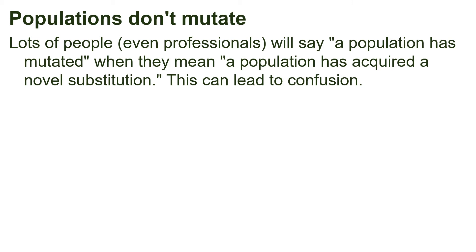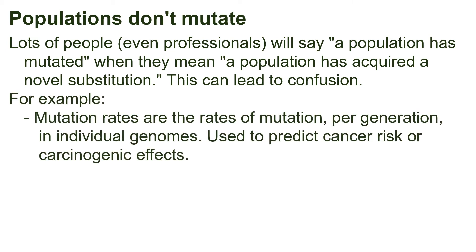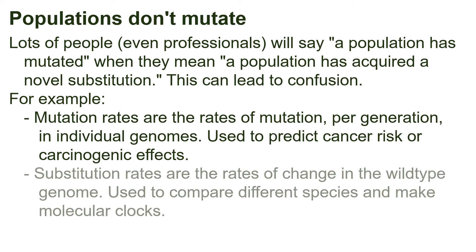This can lead to confusion. Mutation rates are the rates of mutation per generation in individual genomes, and can be used to predict cancer risk or carcinogenic effects. Hazardous chemicals known as mutagens increase the mutation rate, which is bad because somatic mutations can cause cancer. Meanwhile, substitution rates are the rates of change in the wild-type genome — the rate of evolution of the genes. These are used to compare different species and make molecular clocks, and applied in fields like molecular epidemiology to track diseases. Mutation and substitution are completely different processes and shouldn't be mixed up, which is exactly what happens when we use the wrong words.